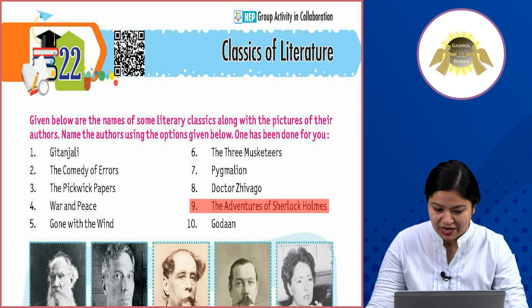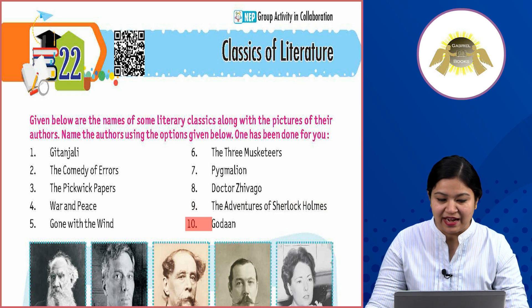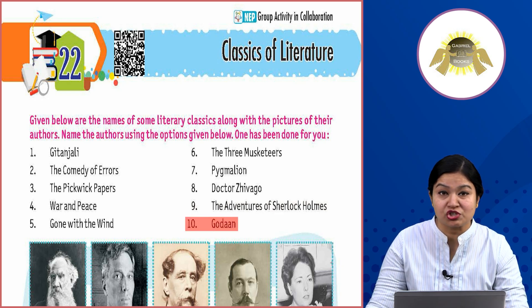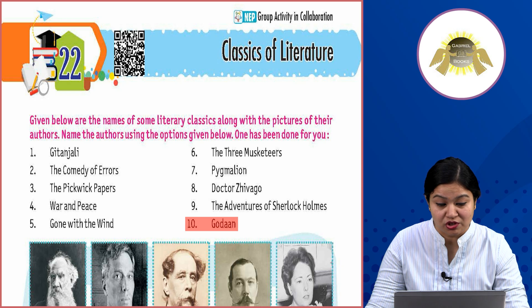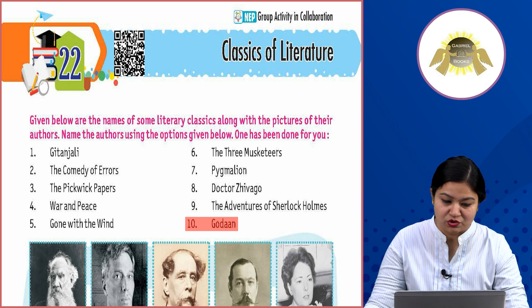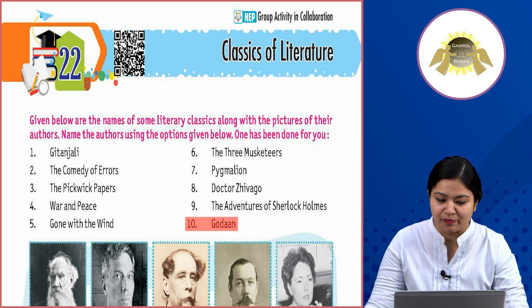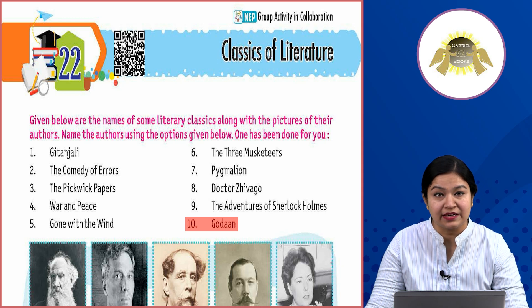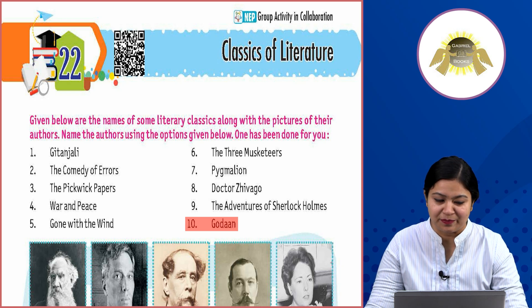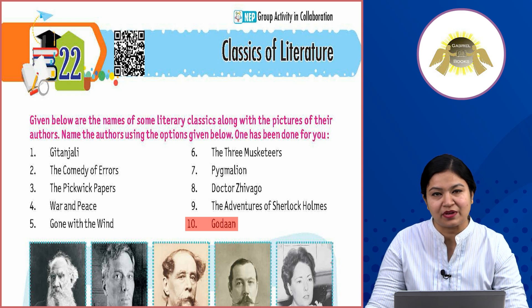Tenth and last: Godan. Godan was written by Munshi Premchand. In the second row, third picture — that is Munshi Premchand's picture. So below his name you will write 'ten B'. In this way your activity will be complete.